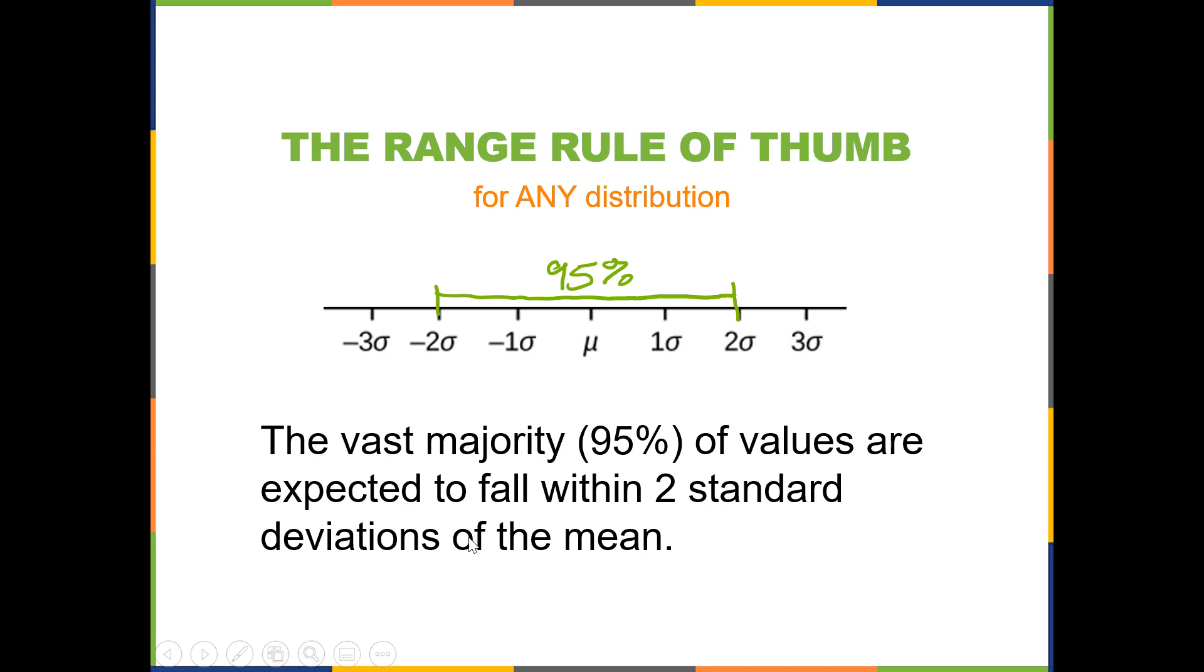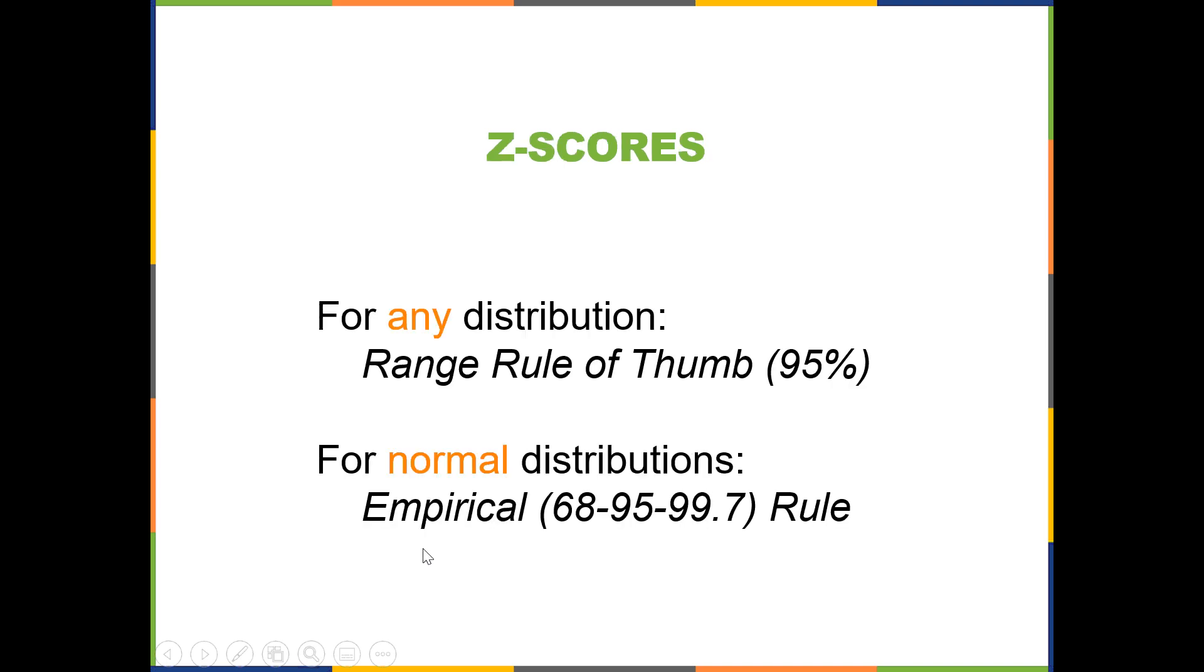Now for z-scores, what we can expect for any distribution—I think that slide must be out of place. The order is a little wonky. This is just another slide illustrating we have the range rule of thumb for any distribution, which is the 95% rule within two standard deviations we just saw.